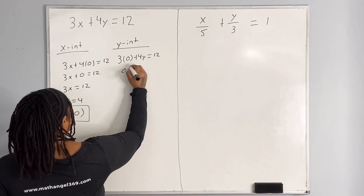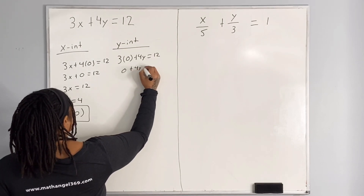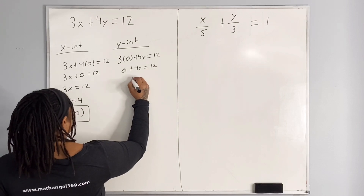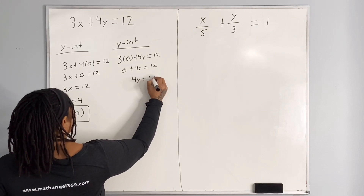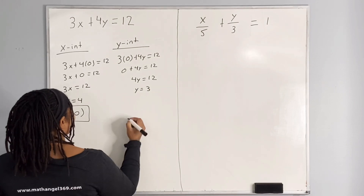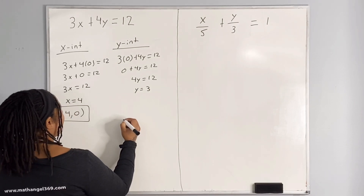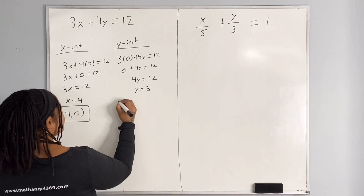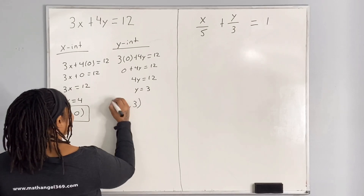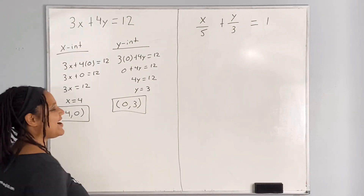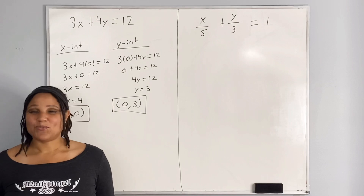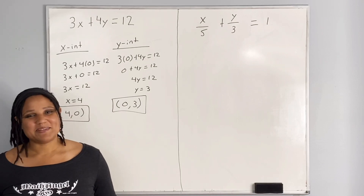which means we have 0 plus 4y is equal to 12, which means we have 4y is equal to 12, which means we have y is equal to 3. So we write our y-intercept as (0, 3). And that is how you find the x and y-intercept of the first problem.